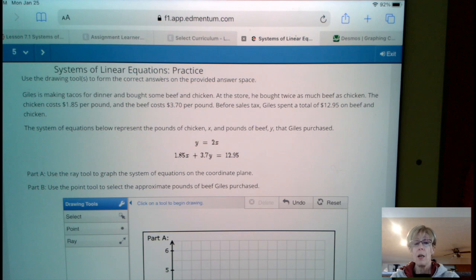We'll go over to Desmos and graph it. I am not going to graph it because I have trouble doing that on my iPad. And then Part B, use the point tool to select the approximate pounds of beef that Gilles purchased.